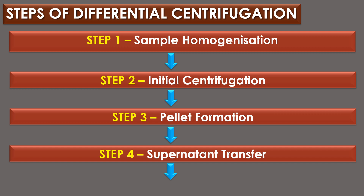Steps of differential centrifugation. Step 1 is sample homogenization: the sample solution, which may contain cells, organelles, or other biological particles, is homogenized in a buffer medium. The buffer helps to maintain the stability and integrity of the sample during the centrifugation process. Step 2 is initial centrifugation: the homogenized sample is placed in a centrifuge tube and subjected to centrifugation at a specific centrifugal force, duration, and temperature. This initial centrifugation step is designed to separate the largest and densest particles from the rest of the sample.